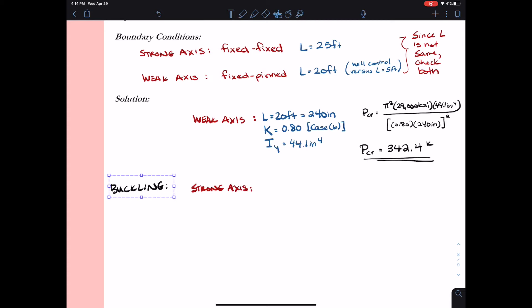Next, I want to look at strong axis buckling. And let me just move this up because I did a poor job of spacing this out. So for strong axis buckling, my length was a total of 25 feet. So 25 feet is 300 inches.